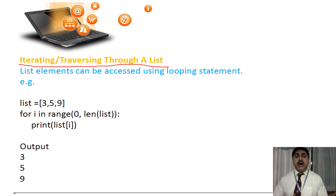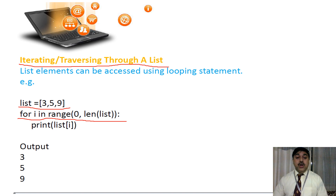Here I have called a list with values 3, 5, and 9. Now I will run this — meaning I will call it again and again. I have used a for loop: `for i in range(len(list))`, which means the range goes from zero to the length of the list. Then `print(list[i])` — where `i` is the loop variable taken from the for loop.